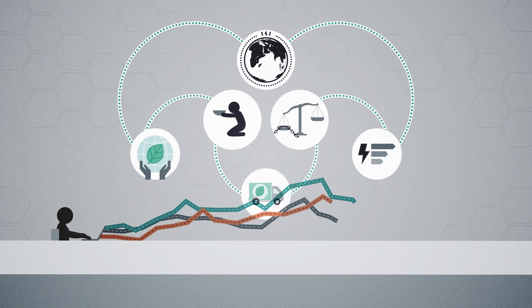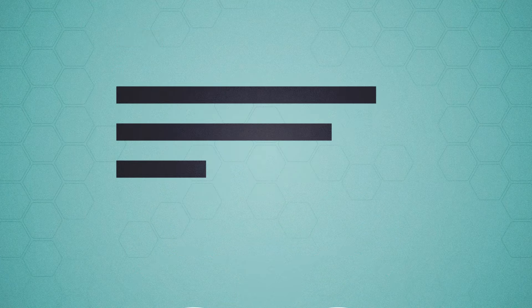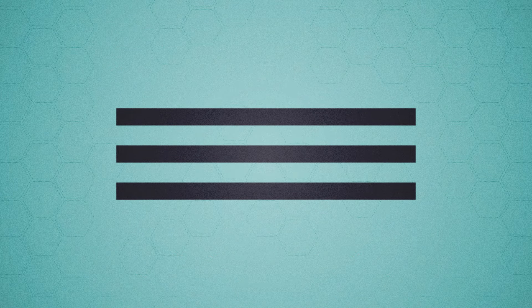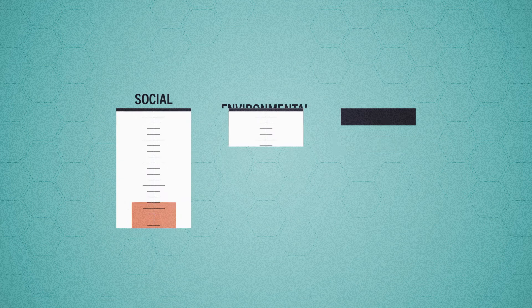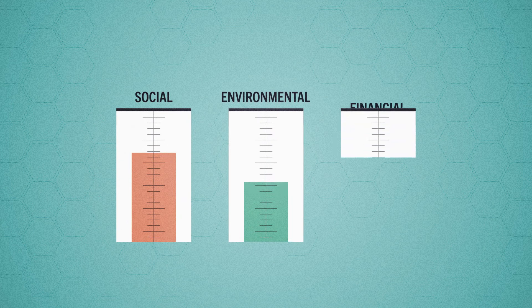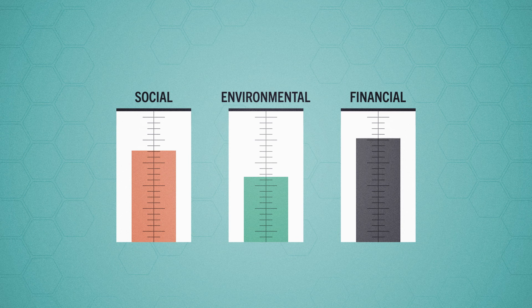One way to understand a business's sustainability efforts is by using the triple bottom line, a concept that posits firms should commit to measuring their social and environmental impact in addition to financial performance rather than solely focusing on profit or the standard bottom line.